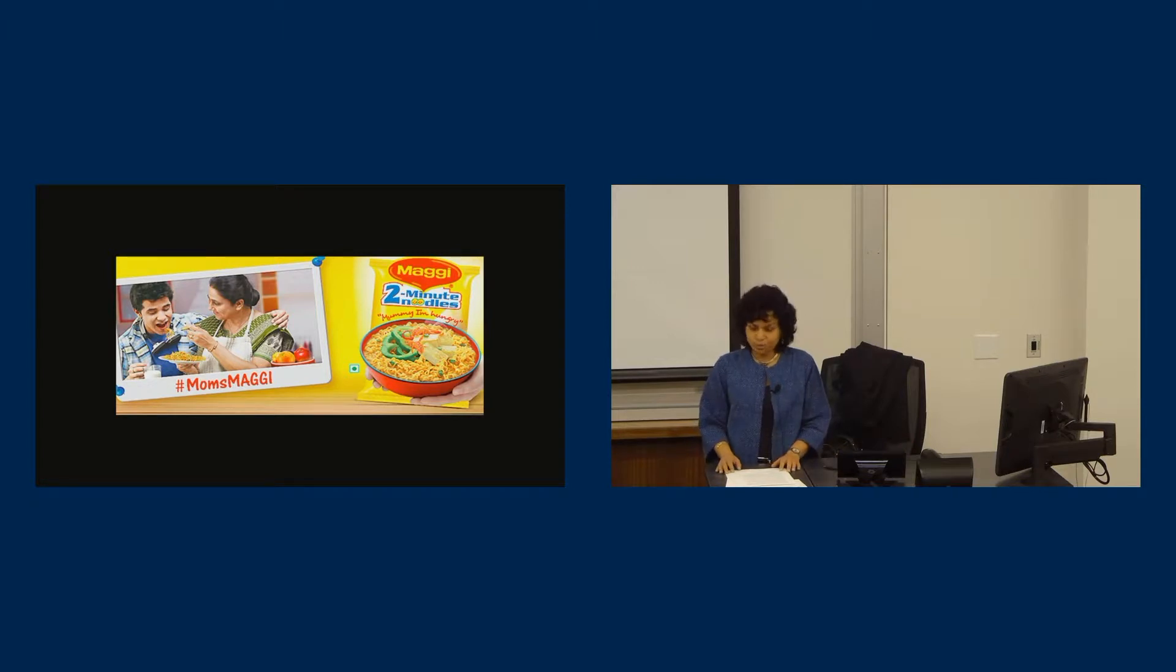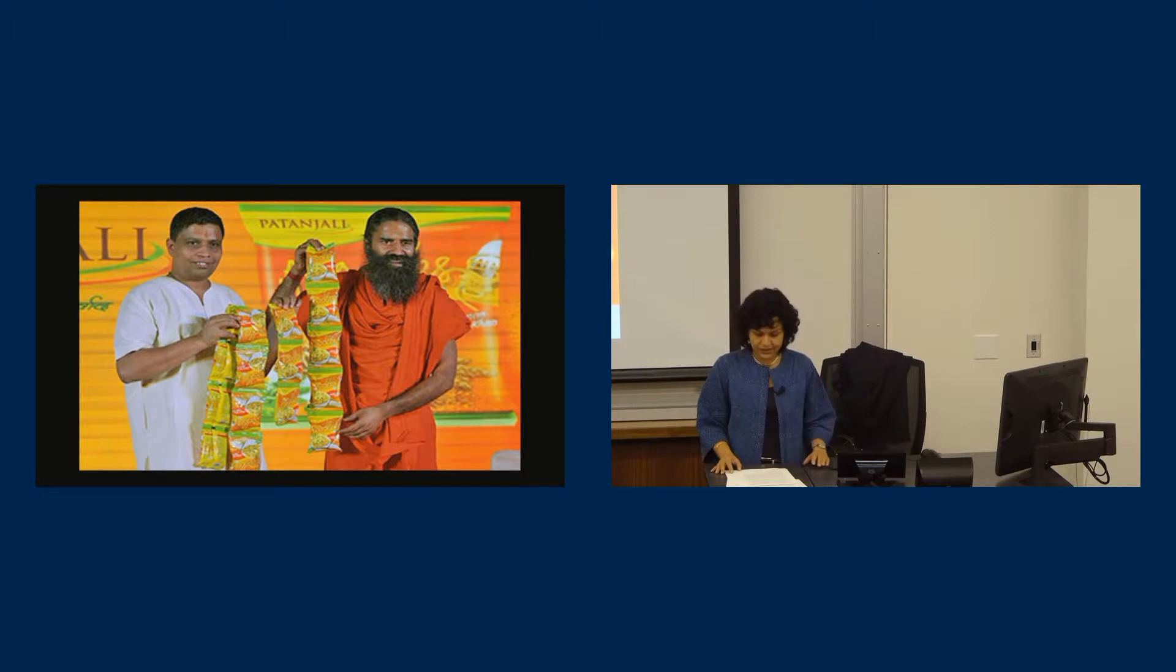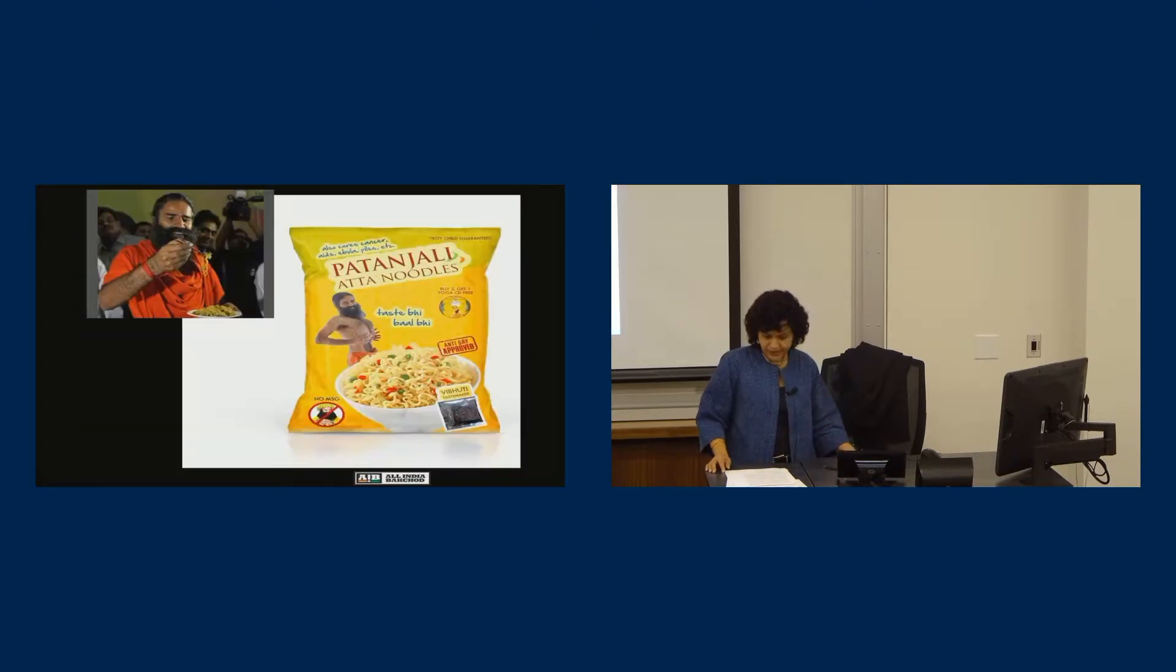After getting government clearance, Maggi was relaunched five months later, but it had lost a lot of ground. It was then that the yoga guru Baba Ramdev, who started a fast-growing packaged food, cosmetic, and medicine empire under the Patanjali Ayurved brand in 2006, launched his own natural noodles. Patanjali claims that its noodles are not only healthier and cheaper, they are also Swadeshi or indigenous. On the rather ironic battleground of instant noodles, Maggi's claim to national belonging now contends with Patanjali noodles' credentials of a more authentically Indian identity.